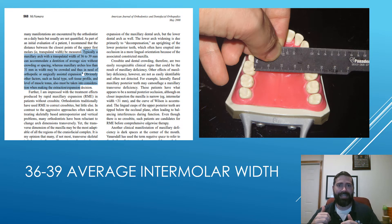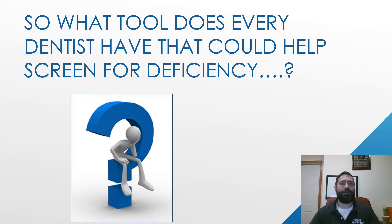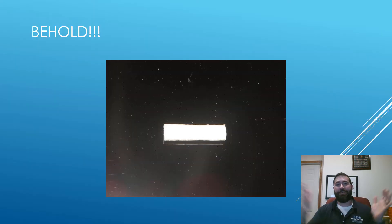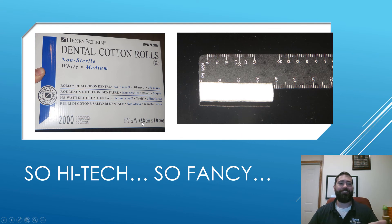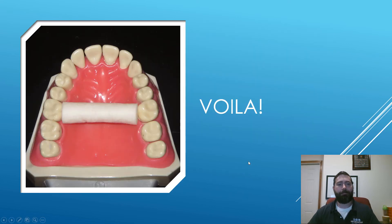But the Panadent ruler is not actually the tool I'm talking about. This is a chairside tool that every dentist is going to have — can you guess what it is? Behold: a standard cotton roll! Something every dentist has, and it's perfect for screening intermaxillary width because it is exactly 38 millimeters long. As you can see here, it's 3.8 centimeters — 38 millimeters — which is perfect for screening.